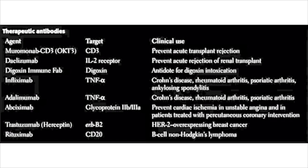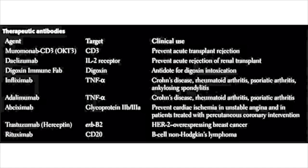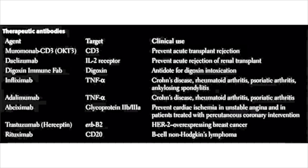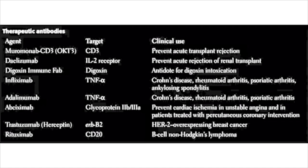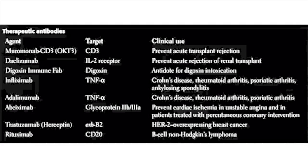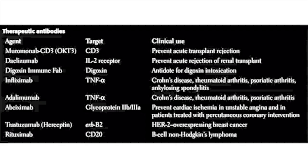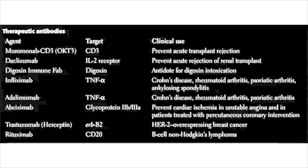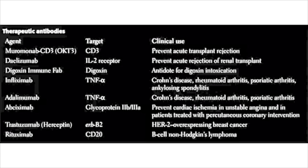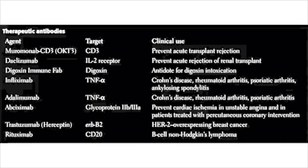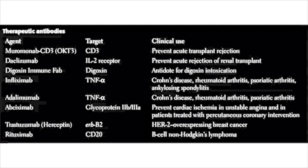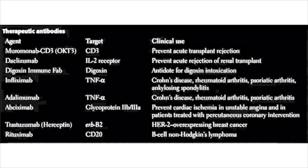Digoxin immune FAB binds up digoxin and is used to treat acute digoxin intoxication. Infliximab is an anti-TNF-alpha monoclonal antibody used for Crohn's disease, rheumatoid arthritis, psoriatic arthritis, and ankylosing spondylitis. All of these diseases are characterized by overactivation of the immune system. One way to tone that down is to create an antibody against TNF-alpha, one of the major inflammatory circulating cytokines responsible for tissue damage in autoimmune conditions.